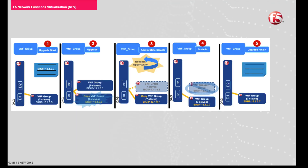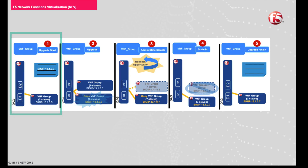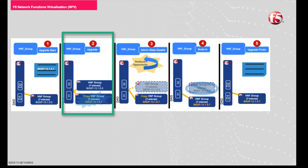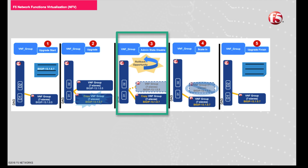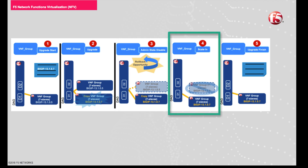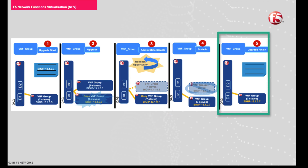Manually upgrading involves executing a series of five workflows. The upgrade start workflow defines the group you are upgrading and the new image to which you are upgrading that group. The upgrade workflow creates a copy of the group being upgraded in all its associated layers, running the new BigIP VE image. The admin state disable workflow bleeds new traffic off of the original VNF group being upgraded. The scale in workflow destroys the older version running the old BigIP VE, and the upgrade finish clears the upgrade definition form used to define the newer image.